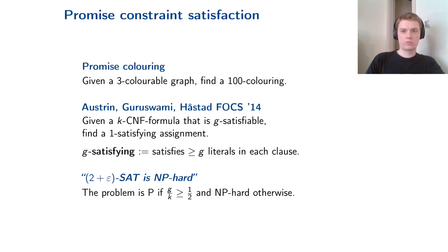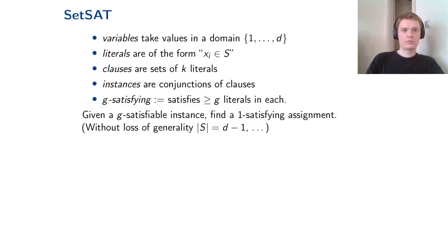In this presentation I focus on an algebraic framework for proving hardness of approximation. The problem considered is similar to the previous one, but instead of a Boolean domain we consider any fixed finite domain. Variables take values from 1 to d for some fixed constant d. Literals are of the form 'x_i is in some set S,' giving arbitrary unary constraints, and clauses are sets of k literals. Instances are conjunctions of clauses, and g-satisfying means satisfying at least g literals in each clause.